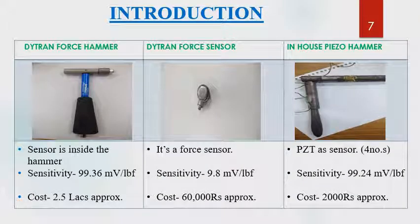Three types of excitations were used during the experiment: Dytran force hammer, Dytran force sensor, and piezo hammer. The Dytran force hammer is very costly at around 2.5 lakh rupees, the Dytran force sensor costs around 60,000 rupees, and the piezo hammer costs just 2,000 rupees. We will evaluate the effectiveness of the piezo hammer in modal analysis compared to the higher-cost Dytran force hammer and Dytran force sensor.